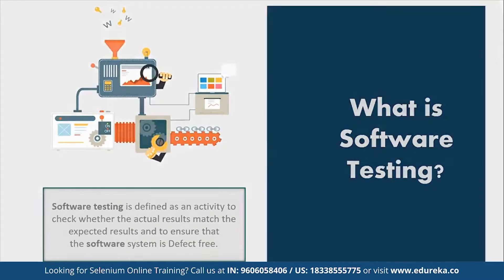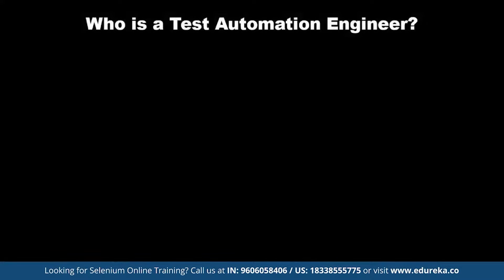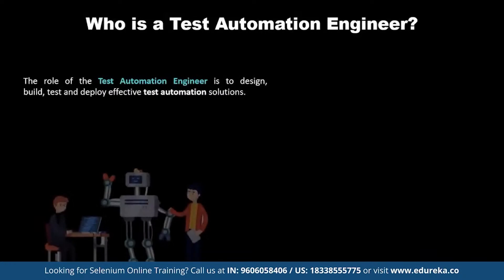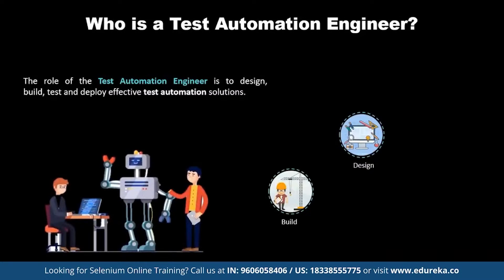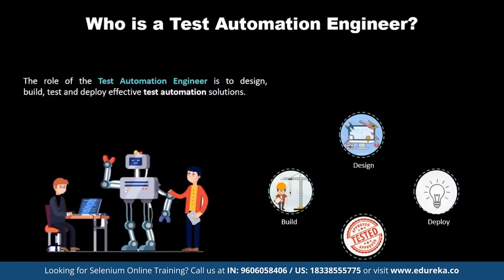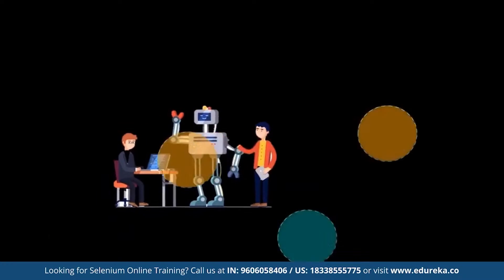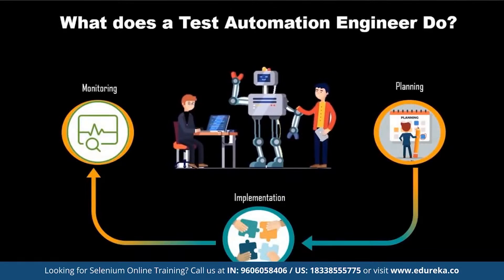Now let's see who is a Testing Automation Engineer. The role of the Test Automation Engineer is to design, build, test, and deploy effective test automation solutions. To fulfill this role, the Automation Engineer applies appropriate automation technologies to meet the short and long term goals of the testing organization. An Automation Engineer basically utilizes technology to improve, streamline, and automate a manufacturing process, and is responsible for planning, implementation, and monitoring of such technology.